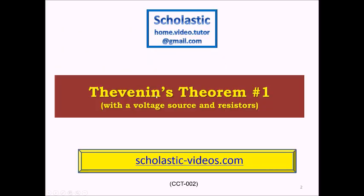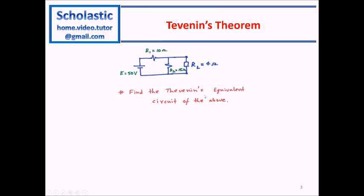Here we are going to look at Thevenin's Theorem with a voltage source and a few resistors. This is the example given here with the voltage source, two resistors, and a load resistor of 4 ohms. R1 is 10 ohms, R2 is 15 ohms, and E is 50 volts.